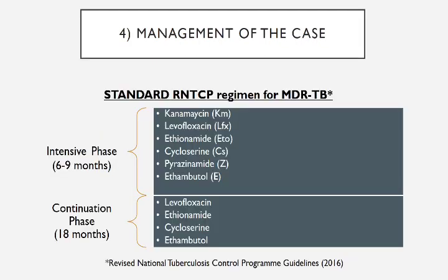Management of the case: The standard RNTCP regimen for MDR-TB suggests an intensive phase of 6–9 months comprising kanamycin, levofloxacin, ethionamide, cycloserine, pyrazinamide, and ethambutol. This is then followed by a continuation phase of 18 months consisting of levofloxacin, ethionamide, cycloserine, and ethambutol.